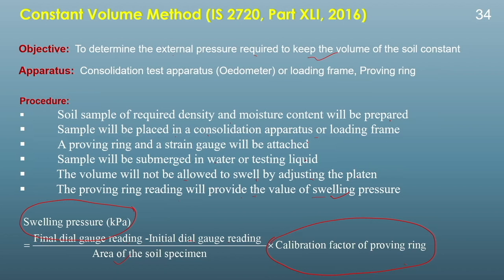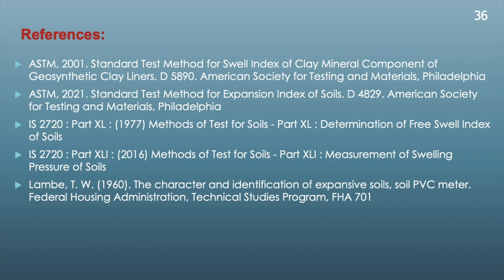These are the methods by which we can determine the swelling pressure and swelling potential of the soil. Apart from these, swelling tendency can also be indicated by the liquid limit or cation exchange capacity. In the next class we will learn about how to classify expansive soil based on different parameters such as free swelling, swelling potential, liquid limit, and plasticity index. Thank you very much.